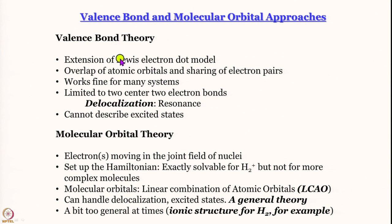Now it is time for us to move over to molecular orbital theory. We have already given a brief executive summary comparing valence bond theory and molecular orbital theory. The advantage of molecular orbital theory is that delocalization can be handled very easily; it is a general theory and excited states are accessible without any hassle. The problem — which we will encounter in the next class — is that sometimes it becomes a little too general; the ionic structure of H2, for example, is overemphasized in a molecular orbital treatment. Nevertheless, MOT is the most popular way of handling electronic structure at this level.